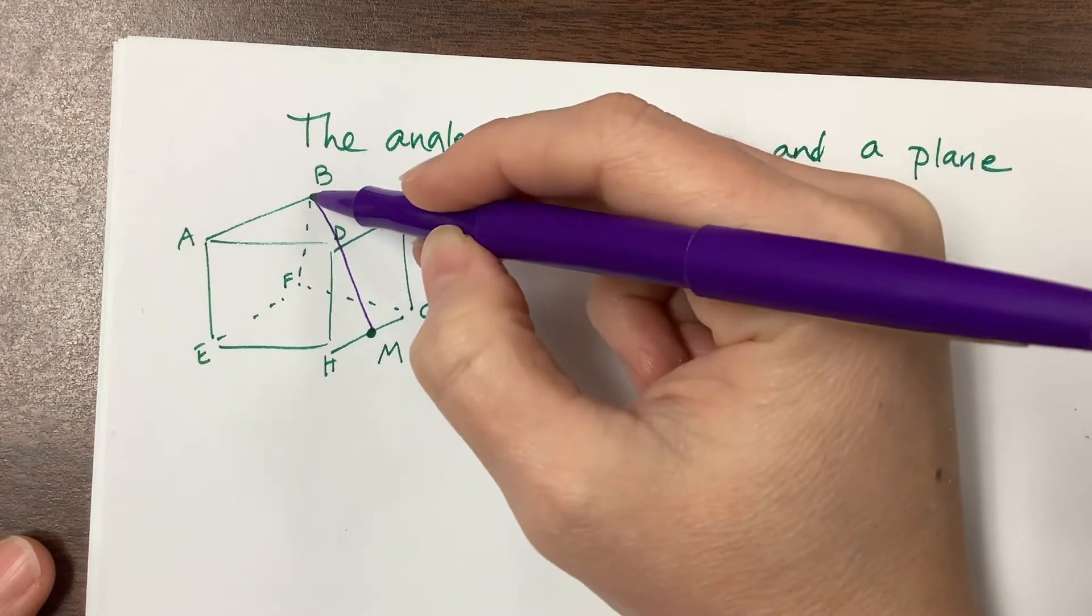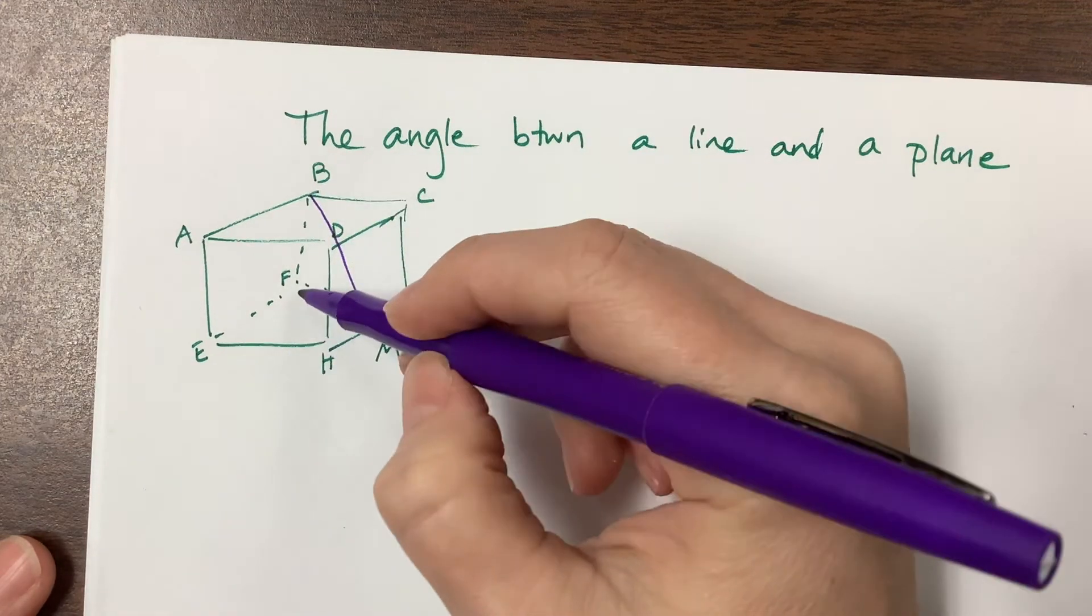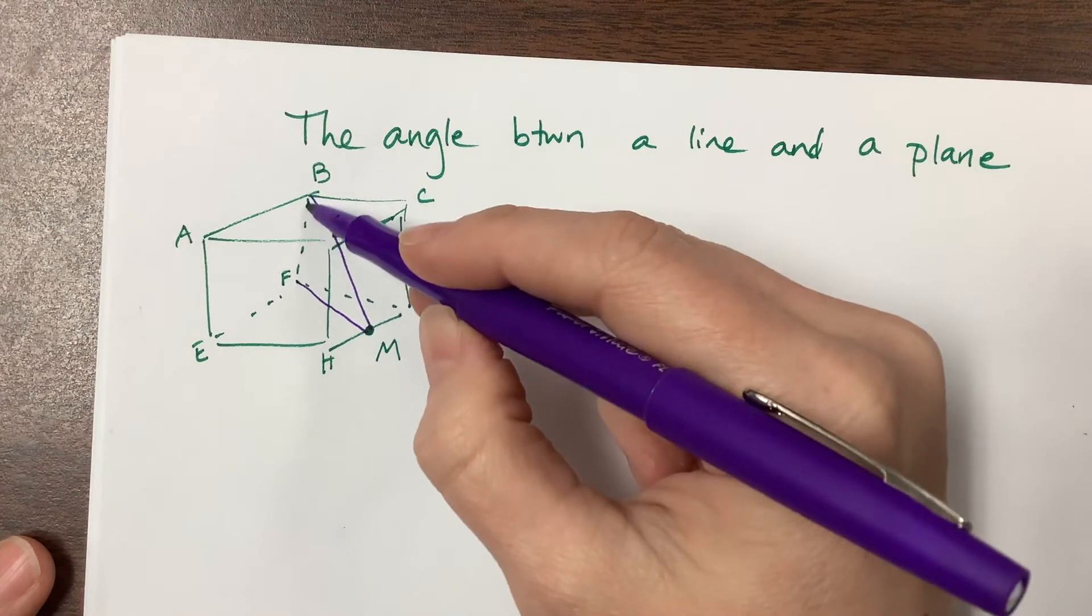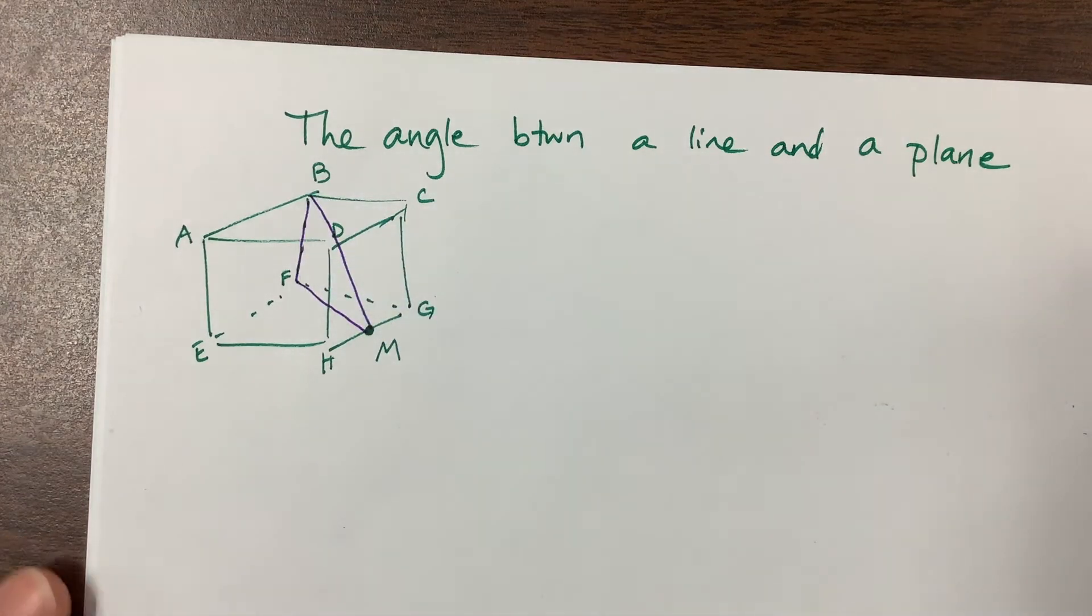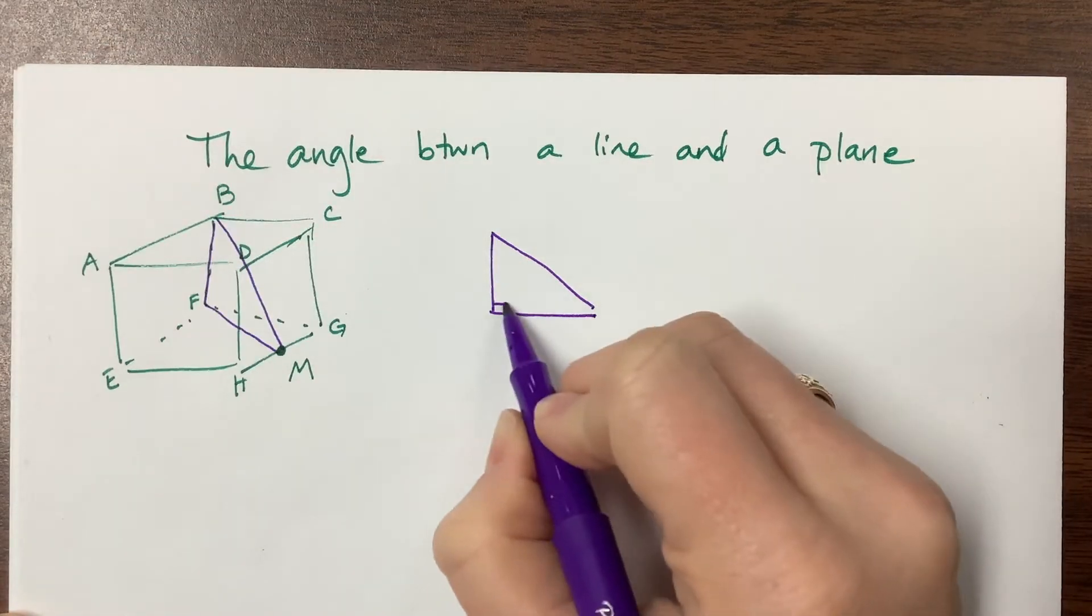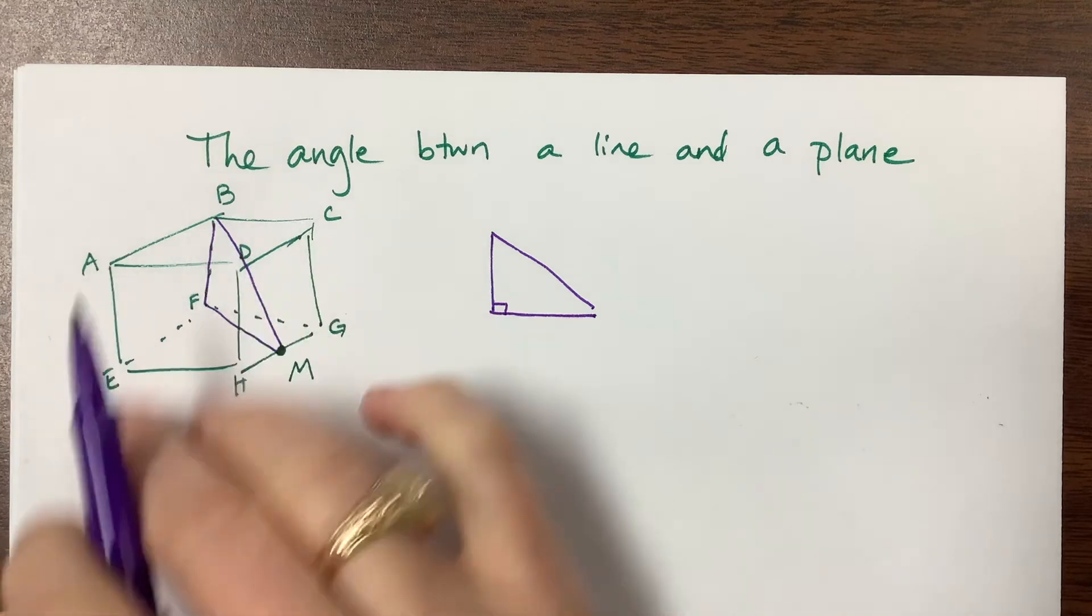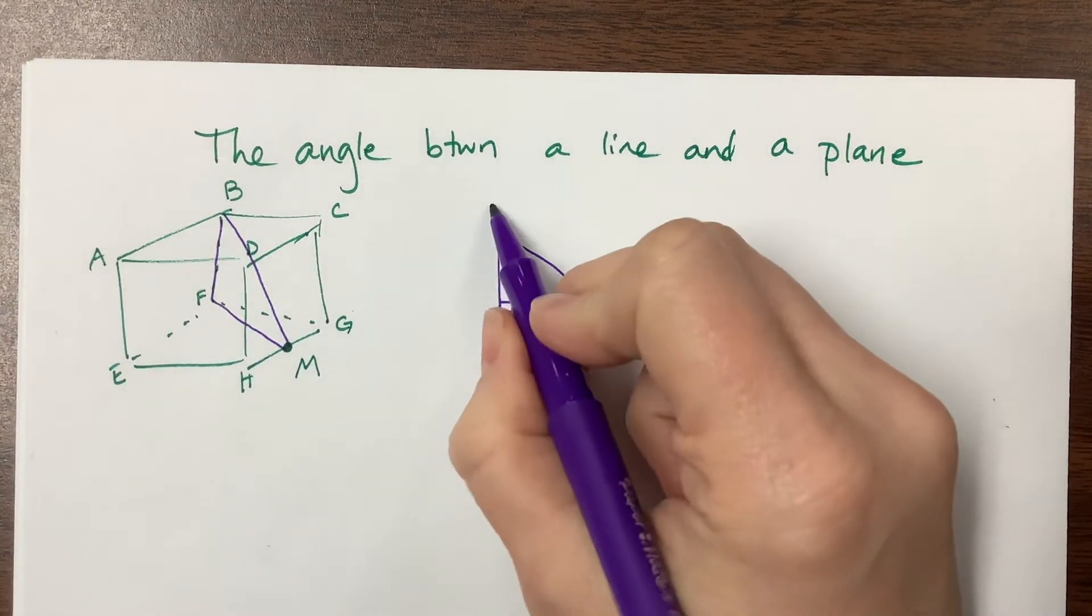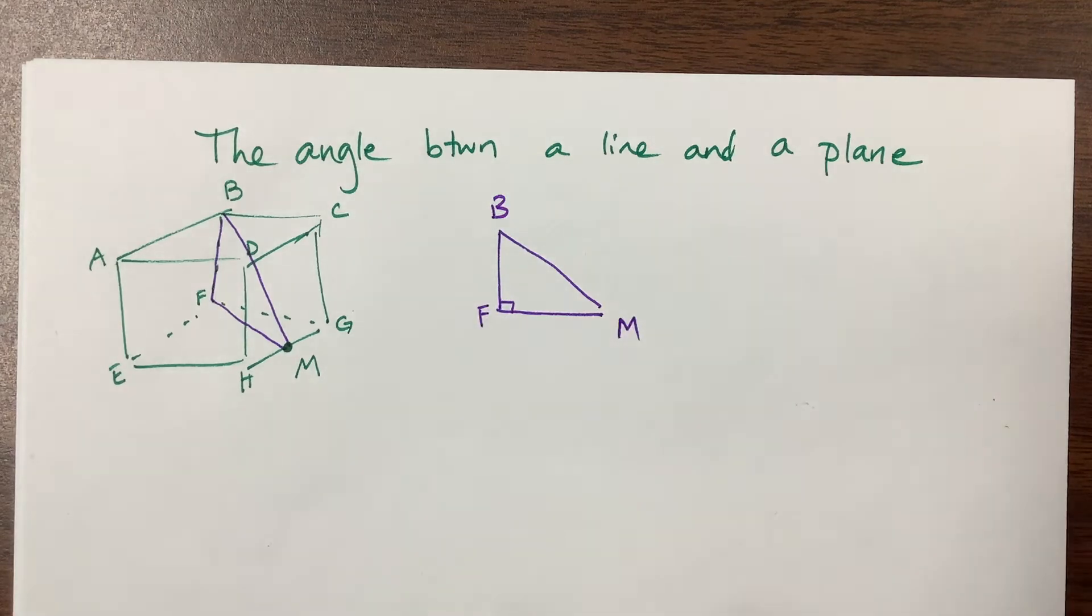So with BM, we can come down and find this FM right here, and now I've got this triangle. So it might be helpful to draw this out off to the side. We know that if this is a right prism, then we've got B at the top, F down here, and then here is M.